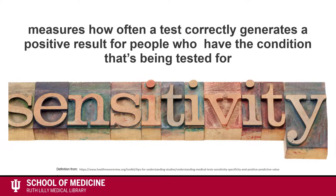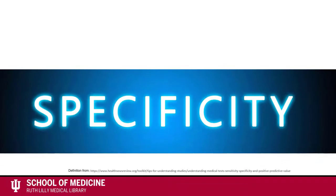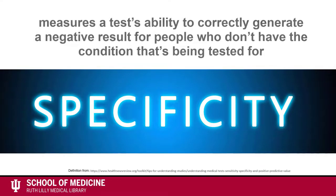Sensitivity measures how often a test correctly generates a positive result for people who do have the condition that's being tested for. Specificity measures a test's ability to correctly generate a negative result for people who don't have the condition that's being tested for.